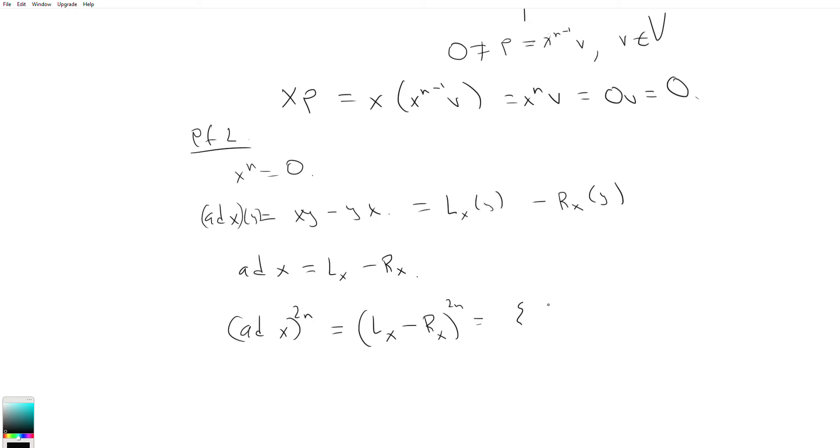Which is equal to sum from i equals 0 to 2n of 2n choose i times, because they commute, we can just flat out apply the binomial formula, L_x to the i times R_x to the 2n minus i times minus 1 to the 2n minus i.